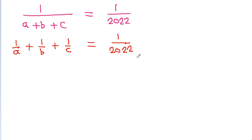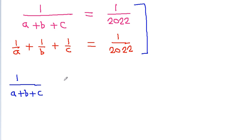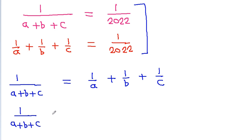So from these two equations, we can get that 1 by A plus B plus C is equal to 1 by A plus 1 by B plus 1 by C. Rearranging, 1 by A plus B plus C minus 1 by A is equal to 1 by B plus 1 by C.